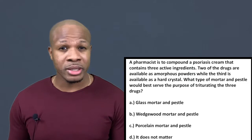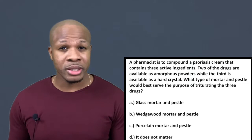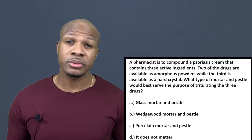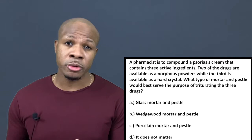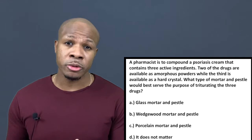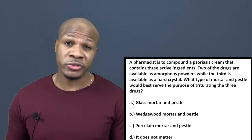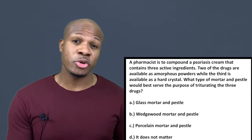You want to choose the best mortar and pestle to grind these three powders together. We have two amorphous powders — amorphous means non-crystalline, so these are soft powders. A good example is sugar: table sugar has a hard crystalline structure, while powdered sugar has an amorphous structure, meaning it lacks a perfect crystalline arrangement. So two of the powders are soft, but one is a hard crystal.